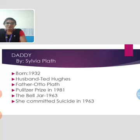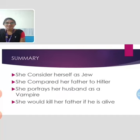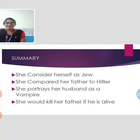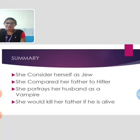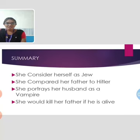Daddy was her famous poem in which she talks about her father Otto Plath and her husband Ted Hughes. She compares herself to a Jew and portrays her father as a Hitler, explaining the cruelty and how she lived all those years with full of pain, very hard to breathe and hard to speak. She compared her husband to a vampire who drank her blood for one year. Out of frustration, she conveyed that she would kill her father and her husband. This is the message conveyed in the poem Daddy.